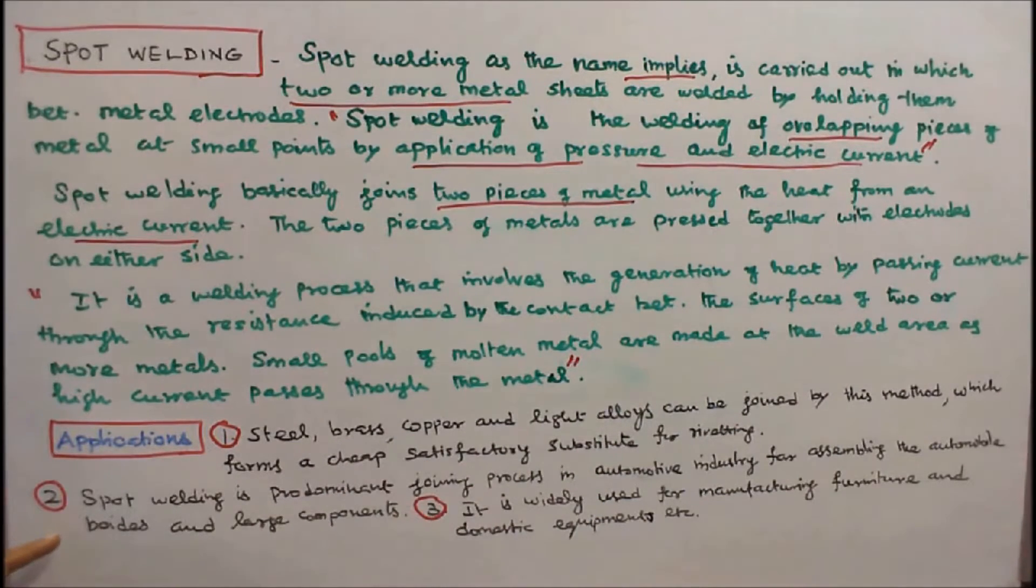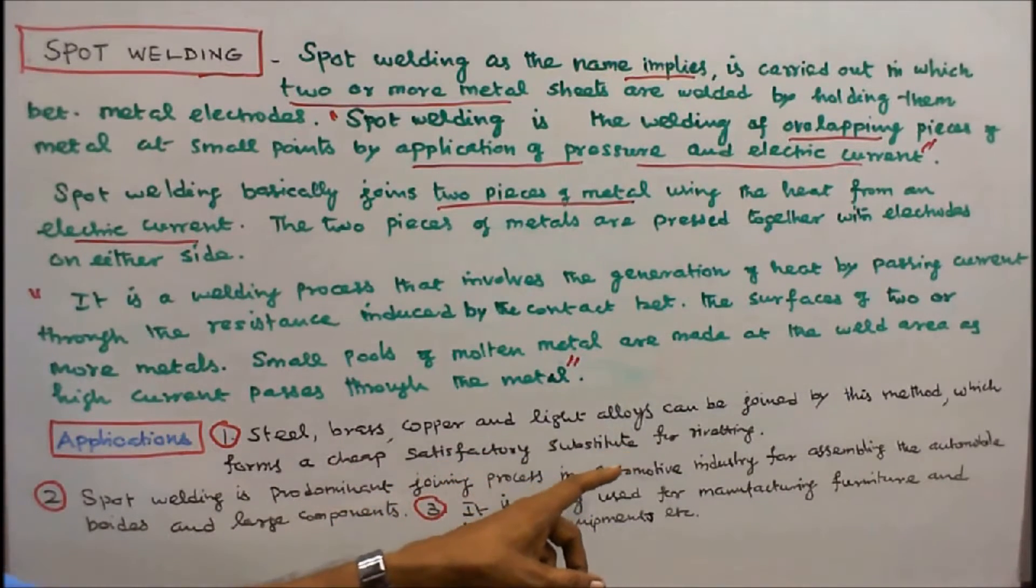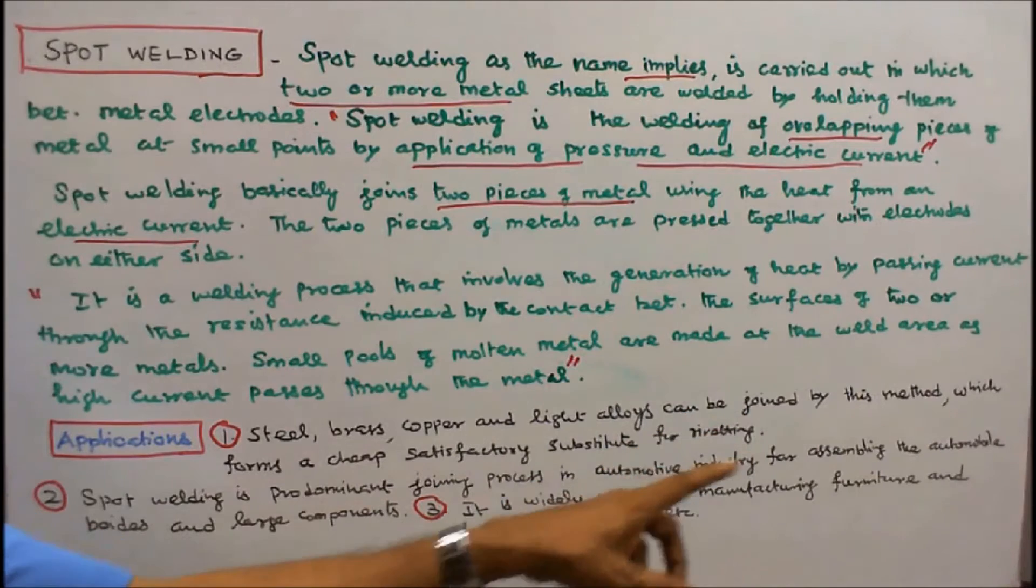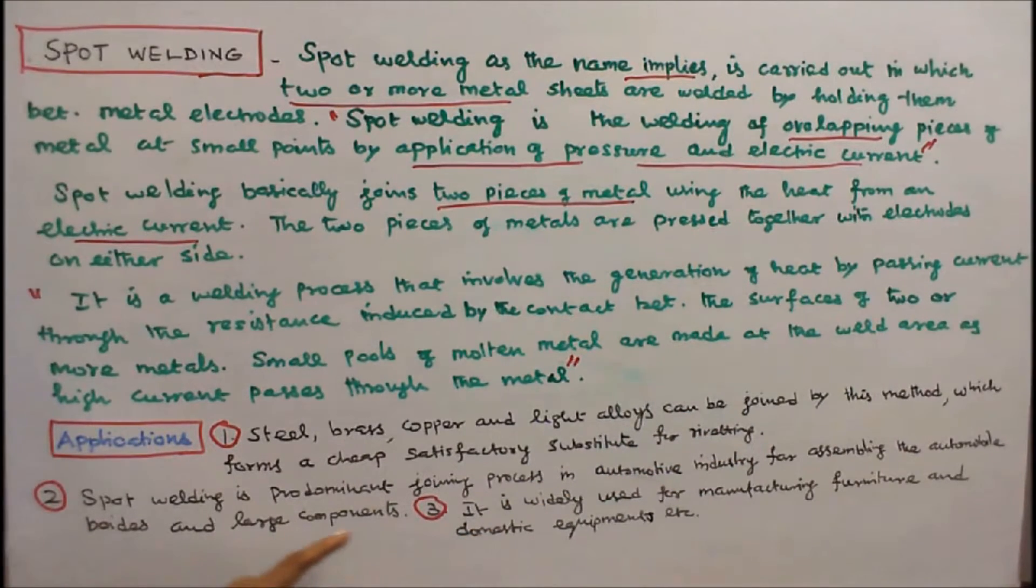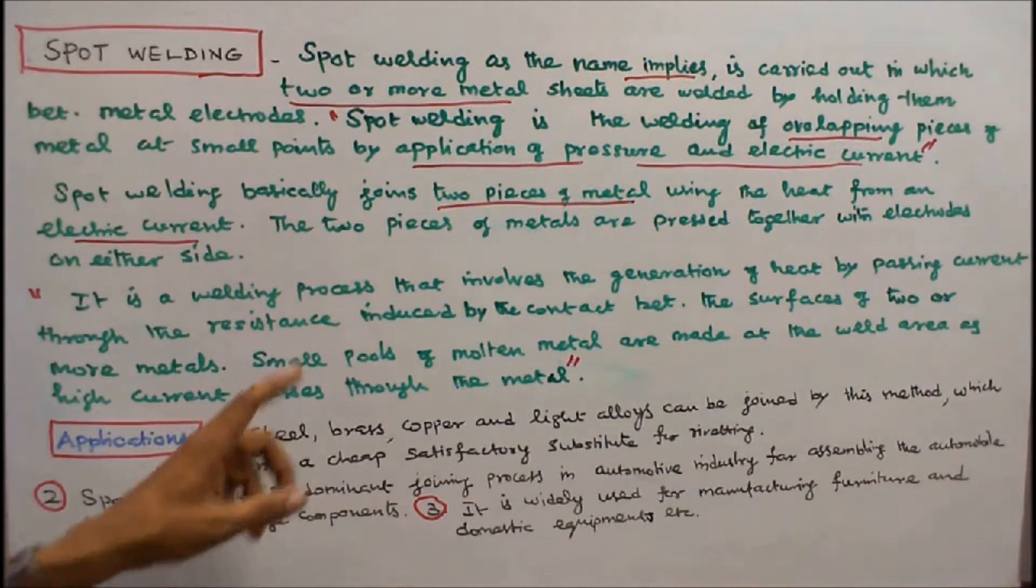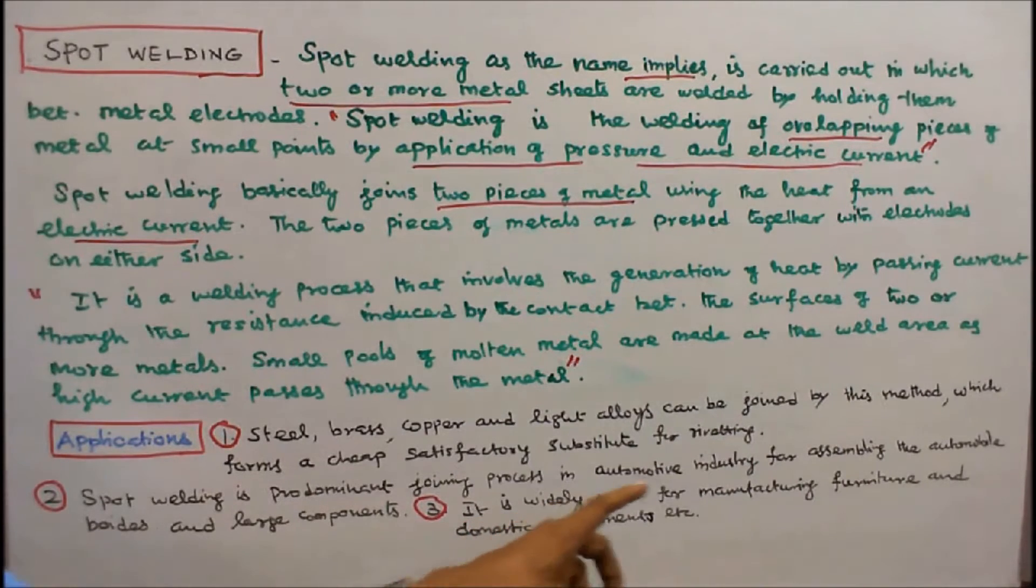Number two, spot welding is the predominant joining process in automotive industry for assembling automobile bodies and large components. Number three, it is widely used for manufacturing furniture and domestic equipment.